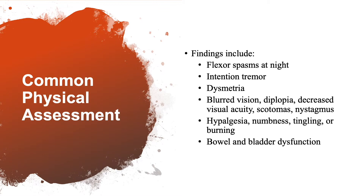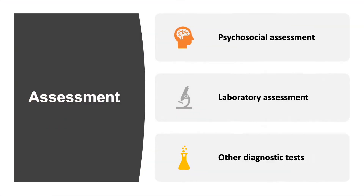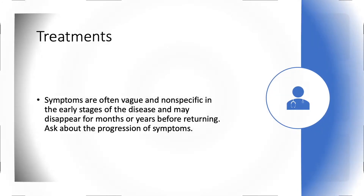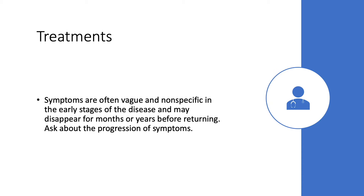Like other spinal cord problems, a thorough psychosocial assessment needs to be done to determine if the patient is coping properly with this diagnosis. Use other tests including laboratory assessments to determine whether this is spinal cord injury or multiple sclerosis. Treatments are often hit and miss because symptoms are vague and nonspecific in early stages and may disappear for months or years before returning.